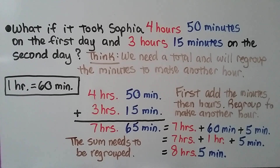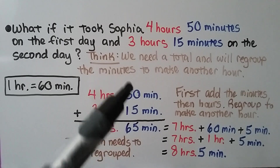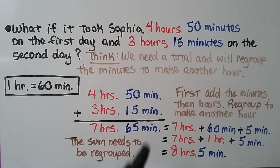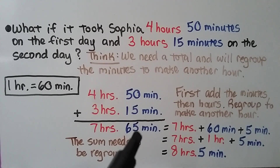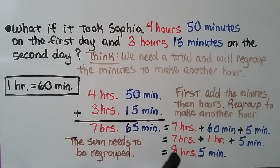What if it took Sophia four hours fifty minutes on the first day and three hours fifteen minutes on the second day? We need a total and we'll regroup the minutes to make another hour, because one hour is sixty minutes. We total the minutes — we get sixty-five minutes. We total the hours — we get seven hours. Now we need to regroup: sixty-five minutes is sixty minutes plus five minutes. That sixty minutes is another hour — seven hours plus one hour is eight hours, with five minutes left over. So the sum needs to be regrouped in this problem.